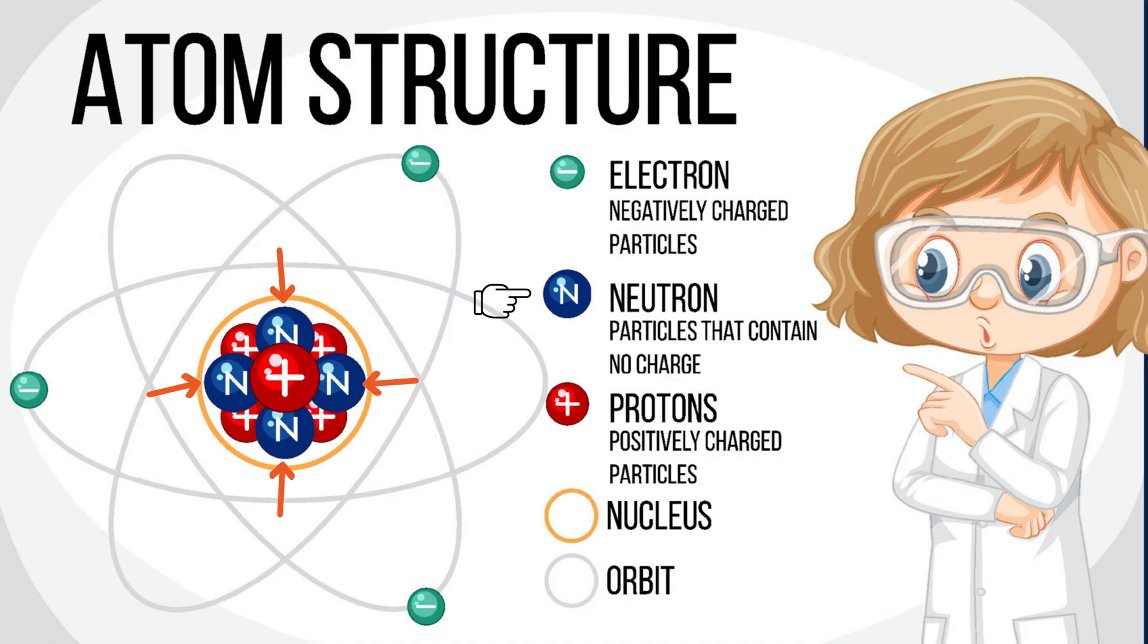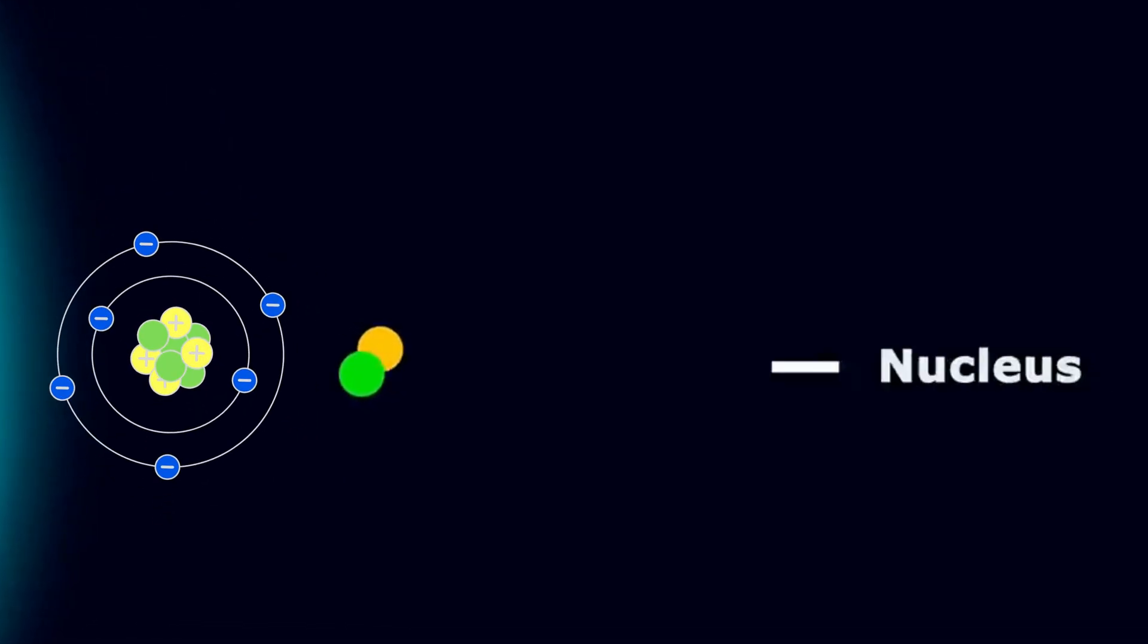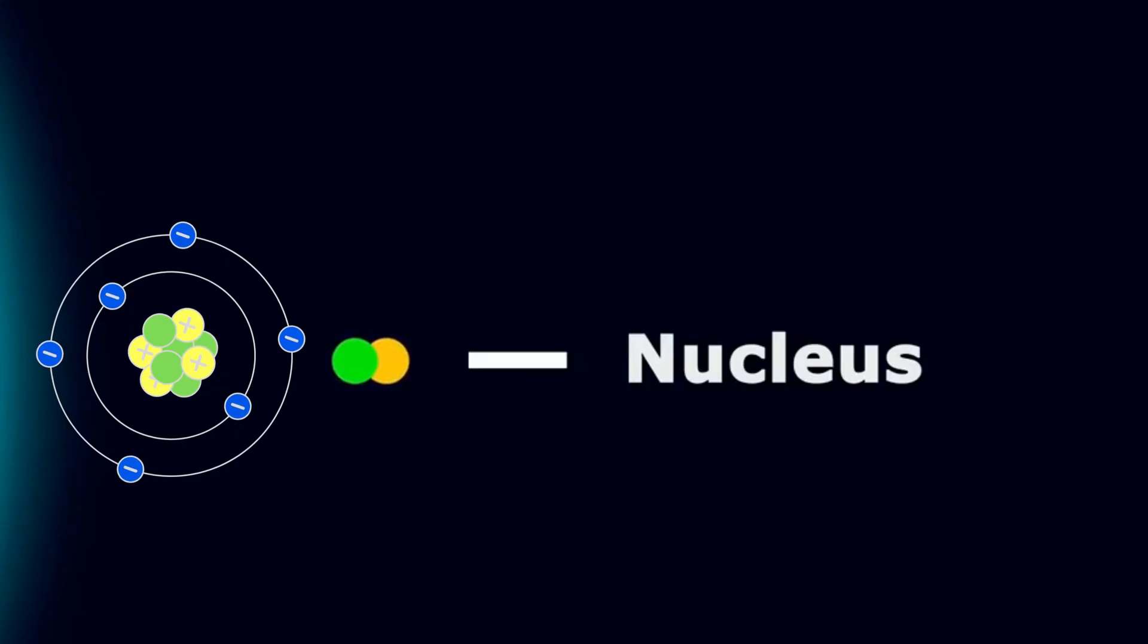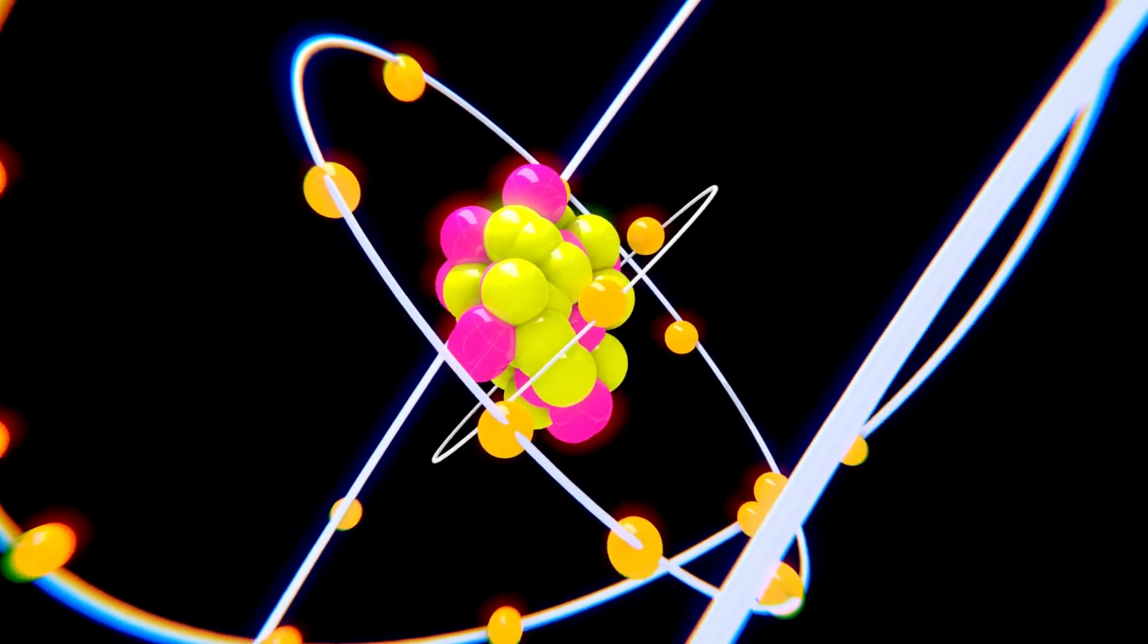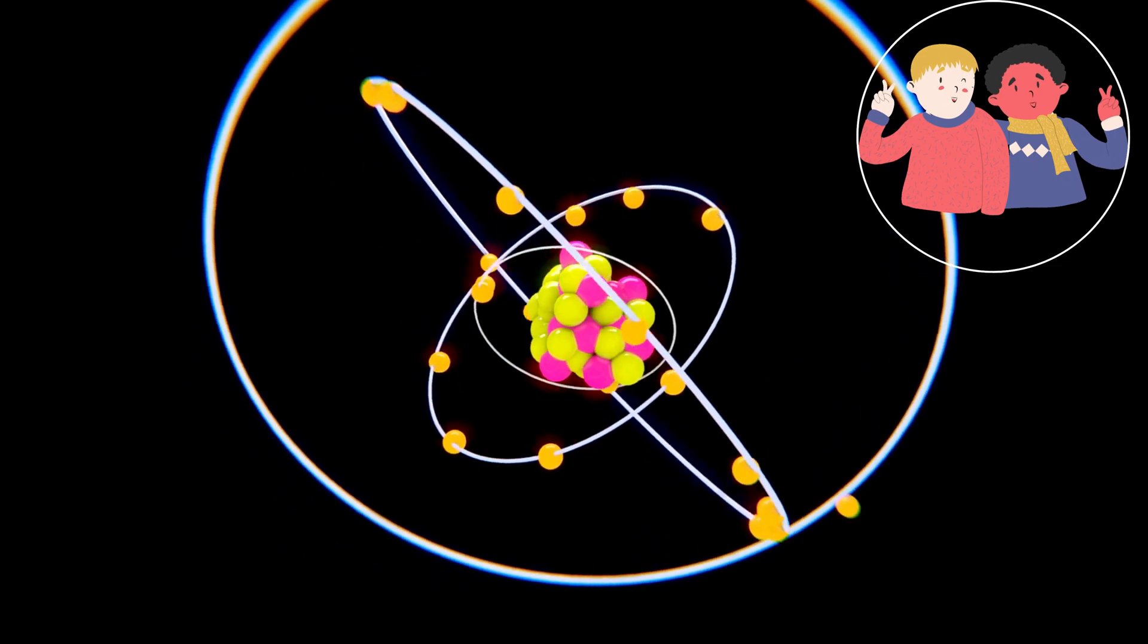Neutrons. These have no charge, just hanging out neutral. Protons. These are tiny particles with a positive charge. The center of the atom is called the nucleus. Say it, nucleus. That's where the protons and neutrons live, like best buddies in a tiny clubhouse.